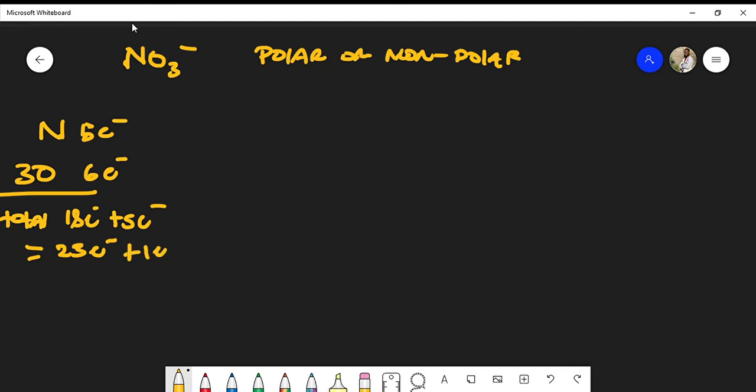But remember that because we have a negative charge, that simply means we add one, so we have 24 total electrons. Usually when you have these molecular formulas, your central atom is going to be typically the furthest left in the molecular formula. Obviously it's not always the case, but most of the time this rule holds up.